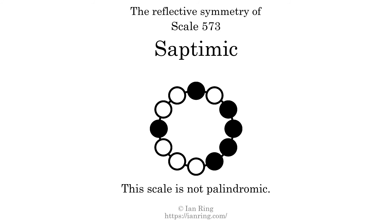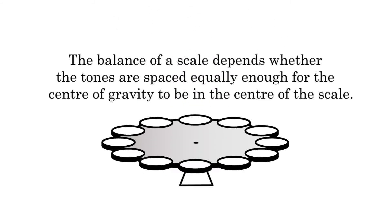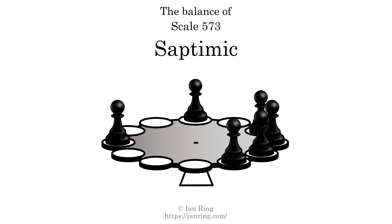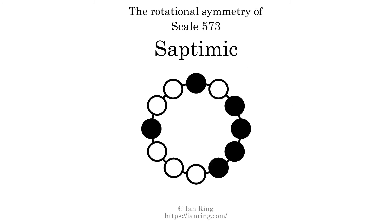This scale has no reflective symmetry. This scale has a different pattern of intervals ascending and descending, so it is not palindromic. This scale has no ridge tones. The balance of a scale depends on whether the tones are spaced equally enough for the center of gravity to be in the center of the scale. This scale is not balanced. The inverse of a scale is a mirror image — it is what you get when the sequence of intervals is reversed. The inverse of this scale is scale 1929, also known as the ellacrimic. This scale is chiral; it cannot transform into its inverse by rotational transformation. This scale has no rotational symmetry.